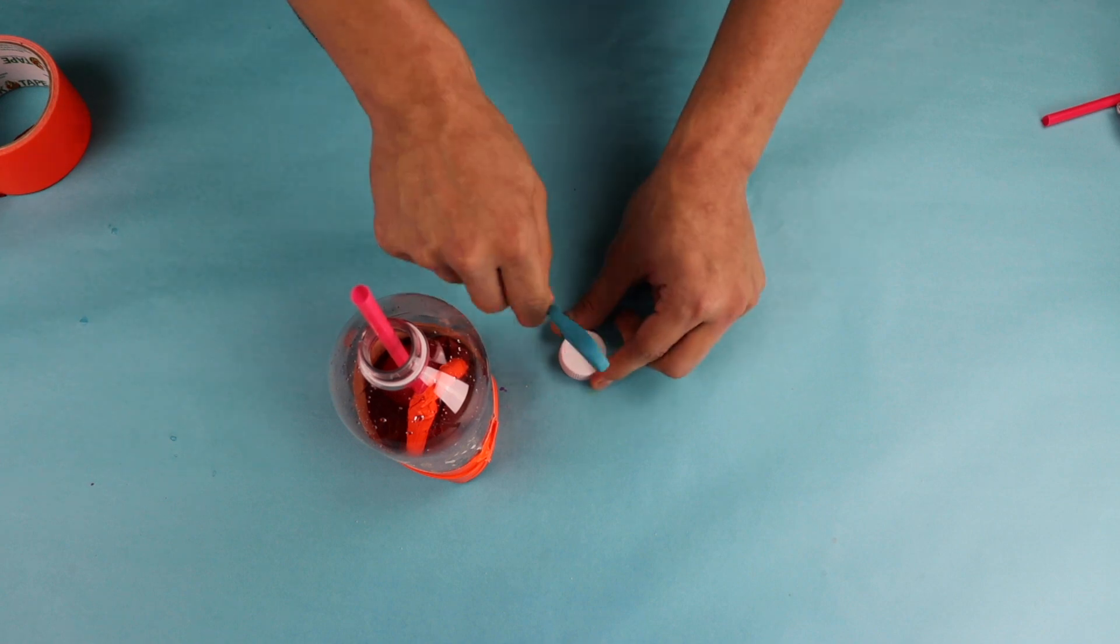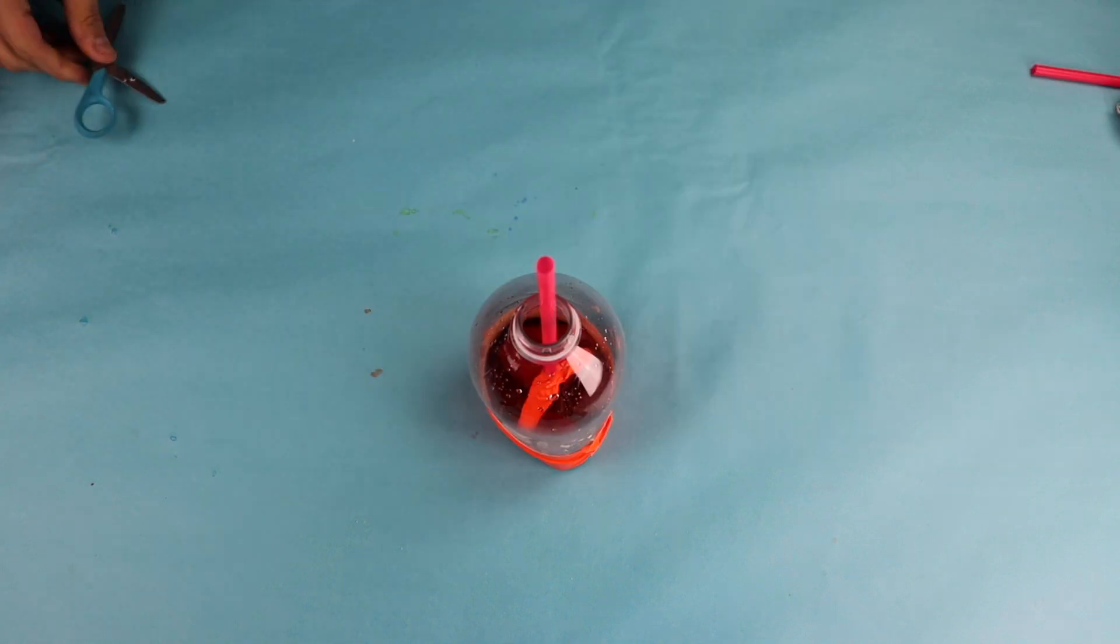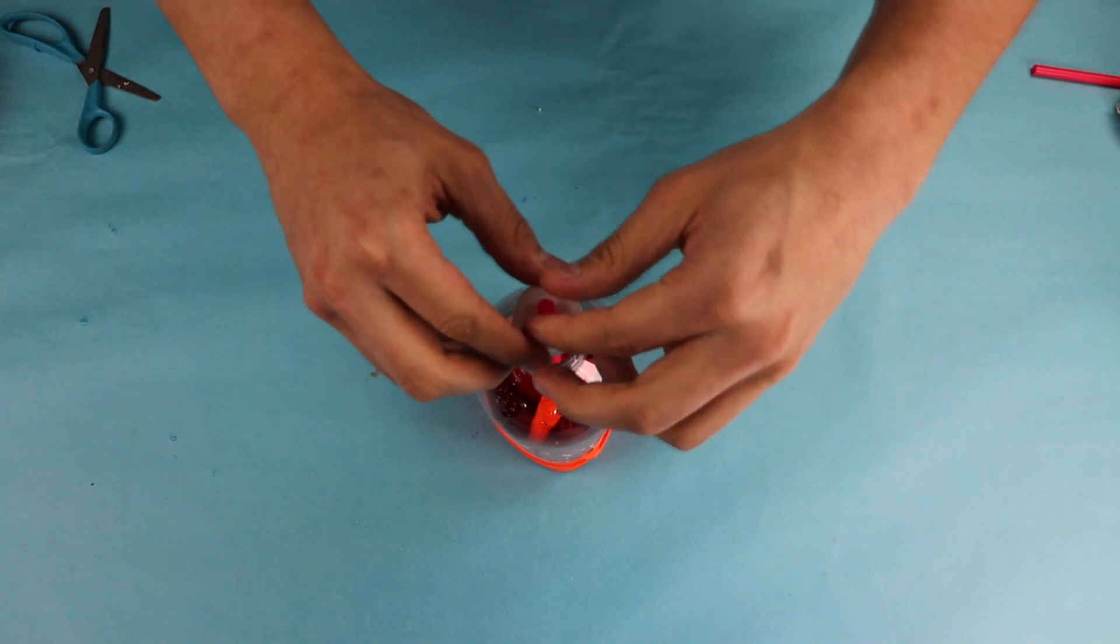Step eleven, for this step, you're going to want to poke a small hole just big enough so that the straw can pass through it in the top of the lid of your bottle.